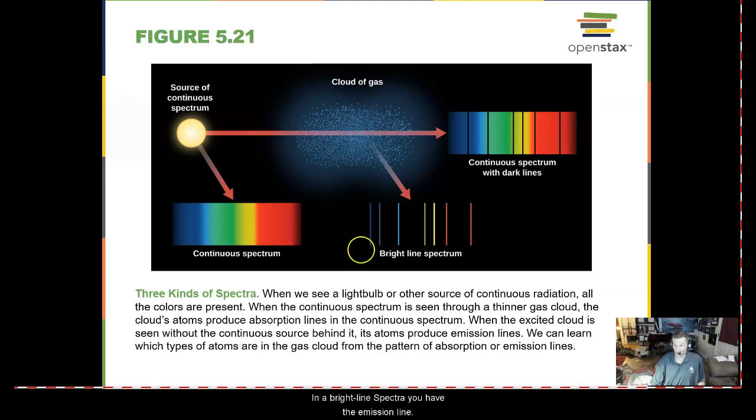In a bright line spectra, you have the emission lines. In a dark line spectra, you have the absorption lines. And it is this that is about 80 to 90% of all astronomy, the continuous spectrum with dark lines or an absorption line spectrum.